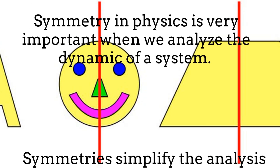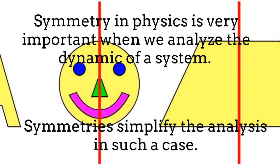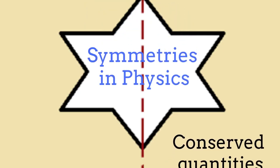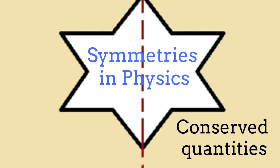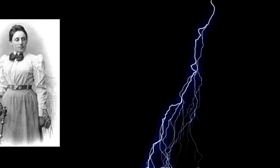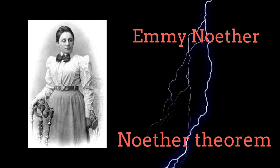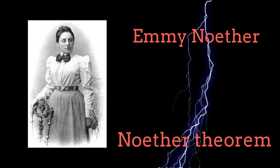Symmetry is a very important concept in physics because it simplifies the analysis in several problems. Symmetries in physics are normally related to the conservation of some physical quantity. This is a consequence of the famous Noether's theorem, which connects the symmetries with conserved quantities.